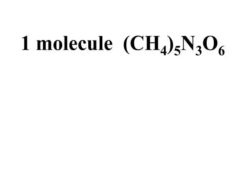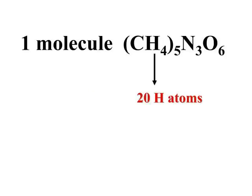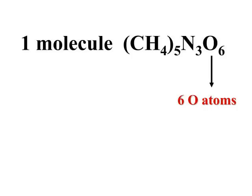The next level of problem is to look within a molecule and figure out the number of atoms present in that formula. Looking at this molecule, the 5 multiplies everything within the parentheses: so you've got 5 carbon atoms, 5 times 4 or 20 hydrogen atoms, 3 nitrogen atoms, and 6 oxygen atoms. Simply distribute the number throughout the parentheses: 5 carbon, 20 hydrogen, 3 nitrogen, and 6 oxygen atoms in one molecule.